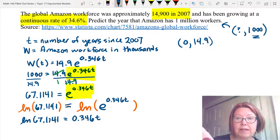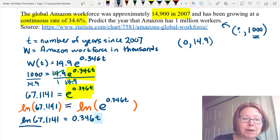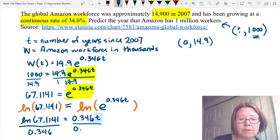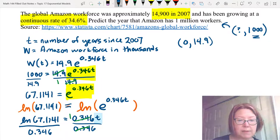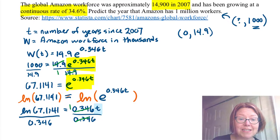And now I need to solve for that t. So I'm going to divide both sides by 0.346. On the right, the 0.346 is reduced to make 1. And on the left, we need to do a little calculation. Taking natural log of 67.1141 divided by 0.346 will give us 12.157 for our value of t.